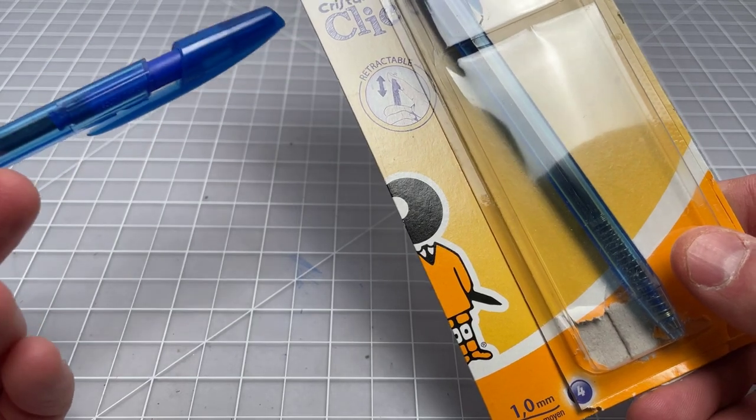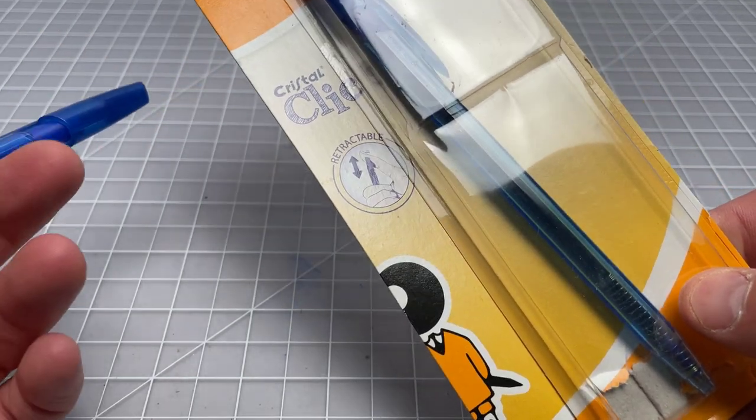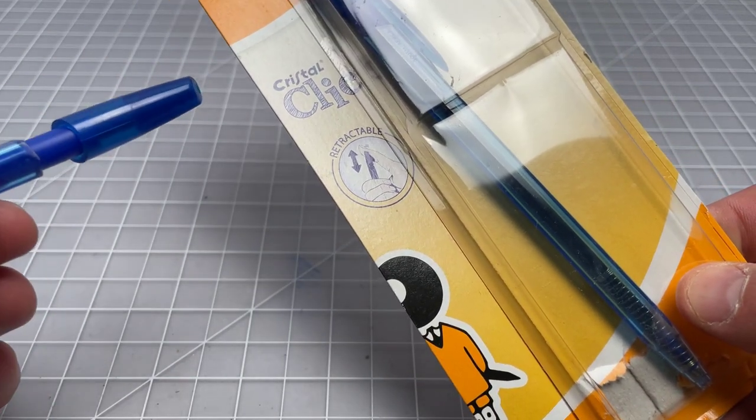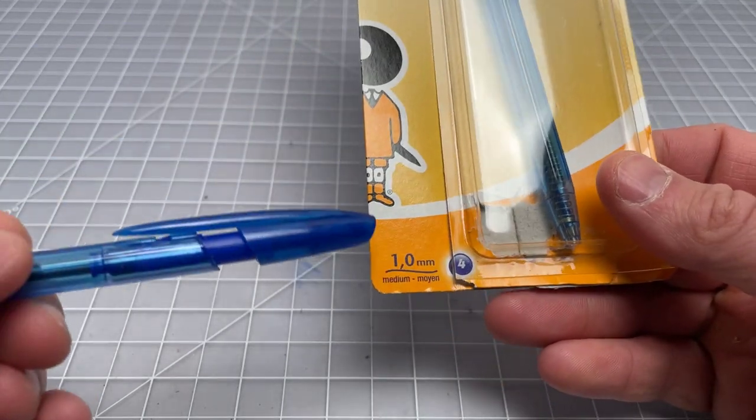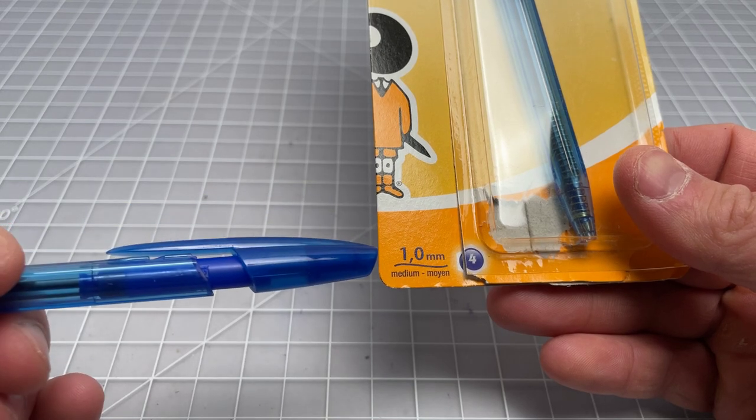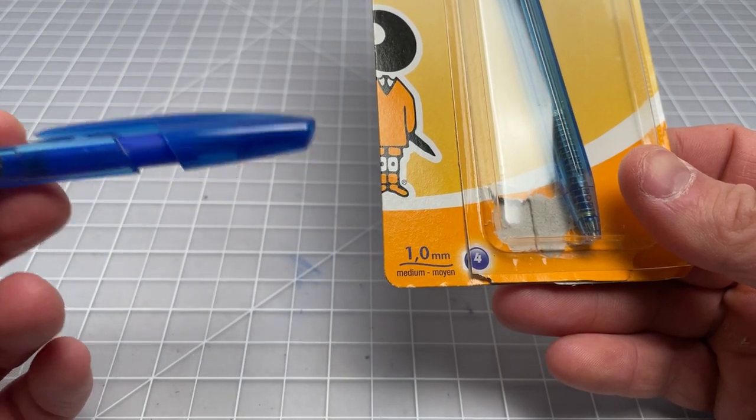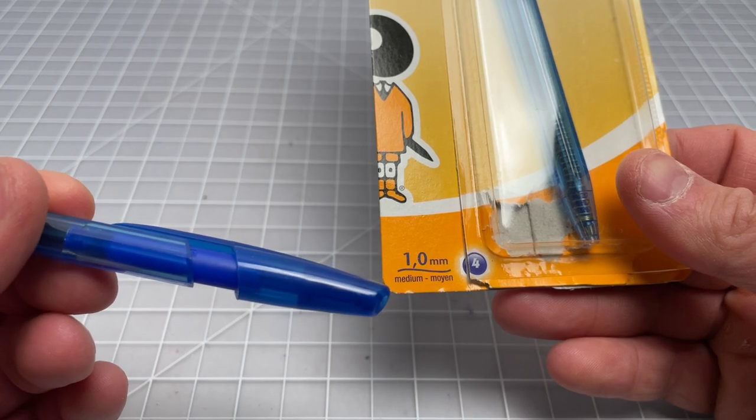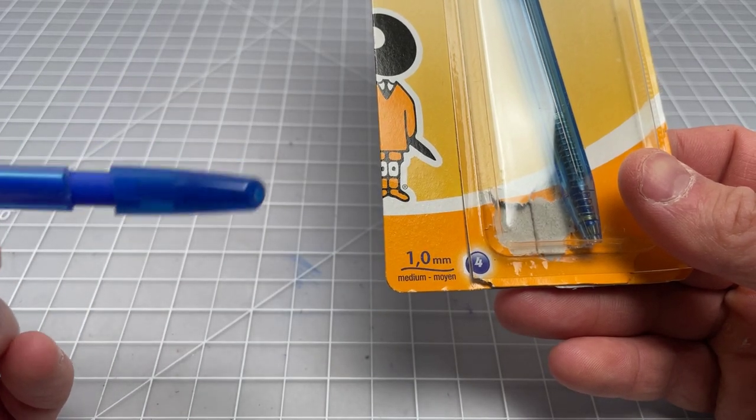It's called the Crystal Click. So it is a crystal. It's not a pen that looks like the crystal. Bic definitely calls it the crystal. It's retractable as we noted. This is the standard size, the 1.0 millimeter, the medium. I tend to prefer the Bic Crystal in the 1.6 millimeter. It doesn't seem to be sold in that width.